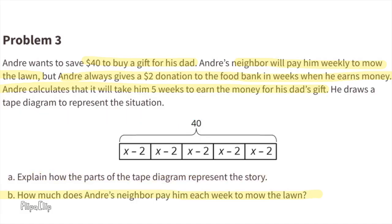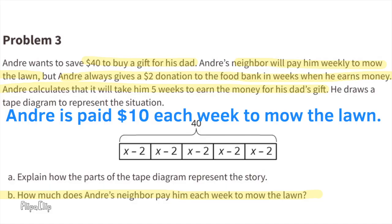Part B: how much does Andre's neighbor pay him each week to mow the lawn? Since five times eight equals 40, and 10 minus two equals eight, X must equal 10. Andre is paid $10 each week to mow the lawn.